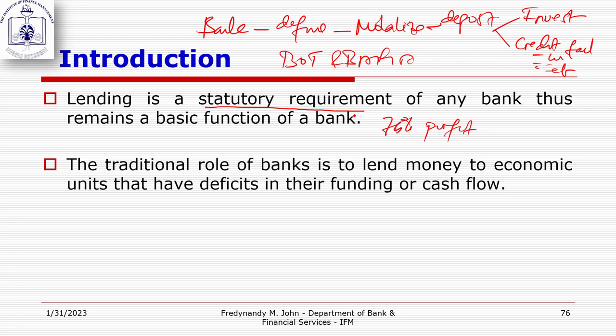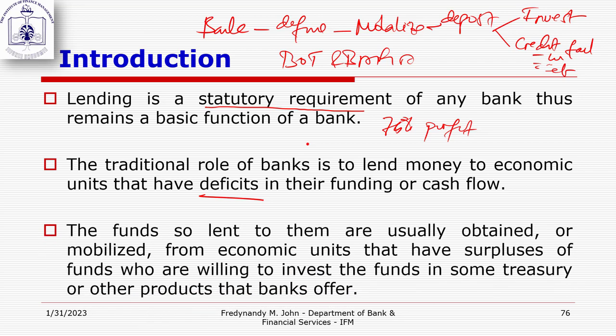Banks perform an intermediation function: they mobilize funds from the surplus spending unit and channel them to the deficit spending unit. By doing lending, the bank is performing effective allocation of resources, which is one of the important tasks that has to be done by banks.